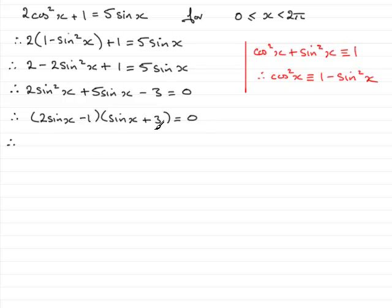So that means that now we've factorized it, either this factor or this factor can equal 0. So we'd say therefore 2sinx - 1 = 0 or the other factor sinx + 3 = 0. So from this first factor, if we rearrange it by adding 1 and dividing by 2 to both sides, we'll end up with sinx = 1/2. Or if we subtract 3 from both sides here, we'll end up with sinx = -3.